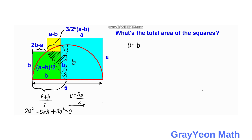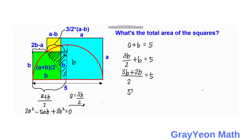We use the given condition that a + b = 5, since the sum of the sides equals the diameter of the semicircle. Substituting a = 3b/2: (3b/2) + b = 5, which simplifies to 5b/2 = 5, so 5b = 10, giving b = 2.